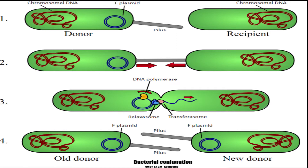It has an origin of replication and an origin of transfer. The relaxase enzyme, or relaxosome, nicks the strands of the conjugative plasmid at the origin of transfer. Then the T-strand DNA is unwound and transferred to the recipient cell.